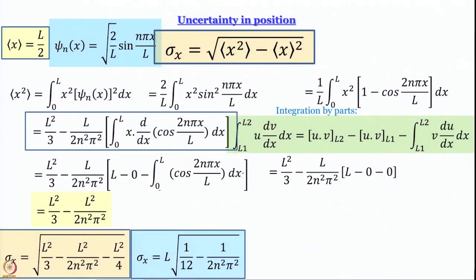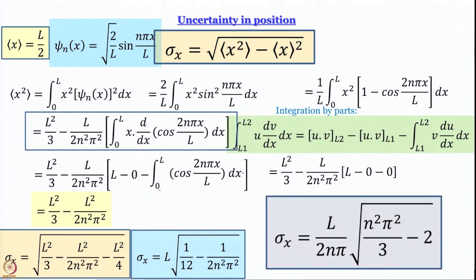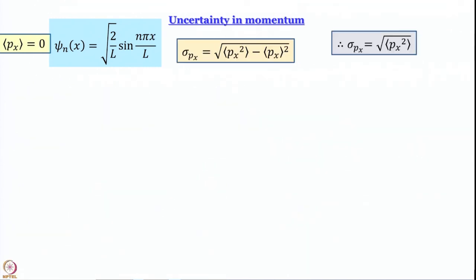The crux of the matter is we now have the expression for uncertainty in position. Let us now seek the expression for uncertainty in linear momentum, which is going to be much easier. Out of the two terms under the square root that we need for uncertainty in momentum, we already know that the average value of px is equal to 0.